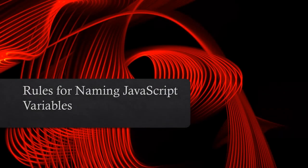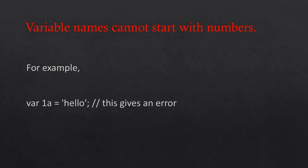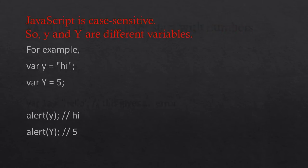Rules for naming JavaScript variables: variable names must start with either a letter, an underscore, or a dollar sign. For example, var a, var _a, and var $a are all valid variable declarations. Variable names cannot start with numbers — for example, var 1a = 'hello' gives an error. JavaScript is case sensitive, so lowercase y and uppercase Y are different variables.